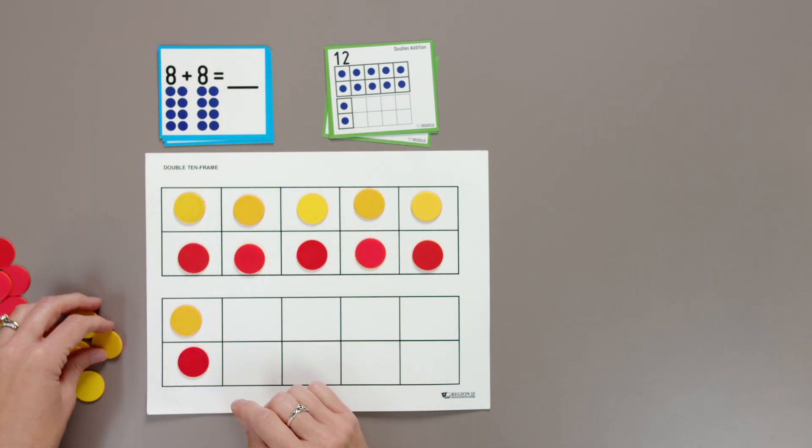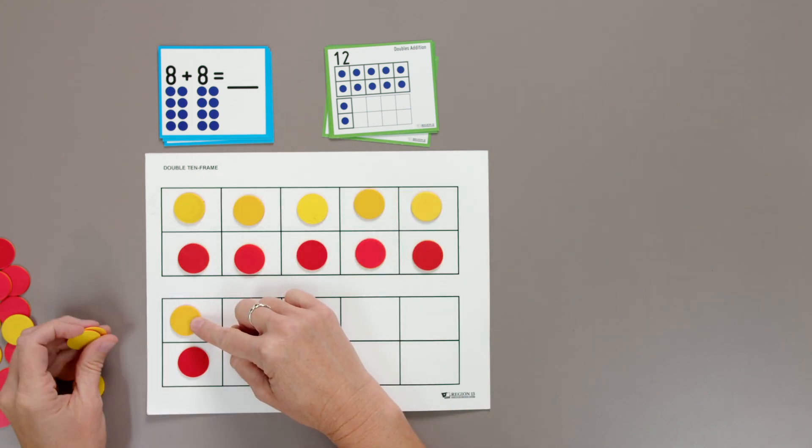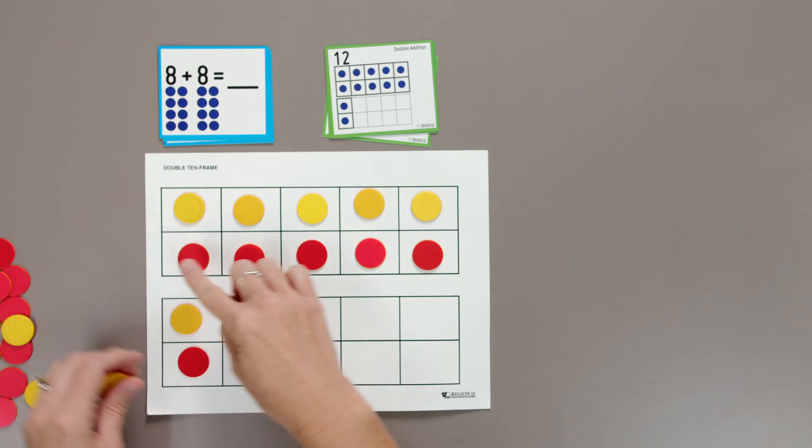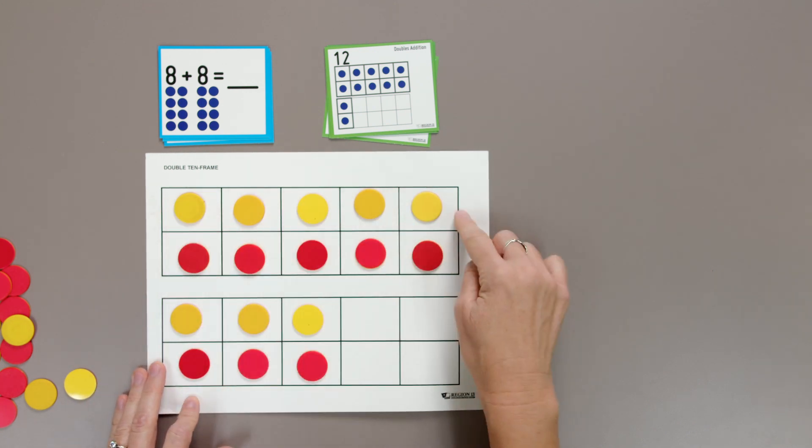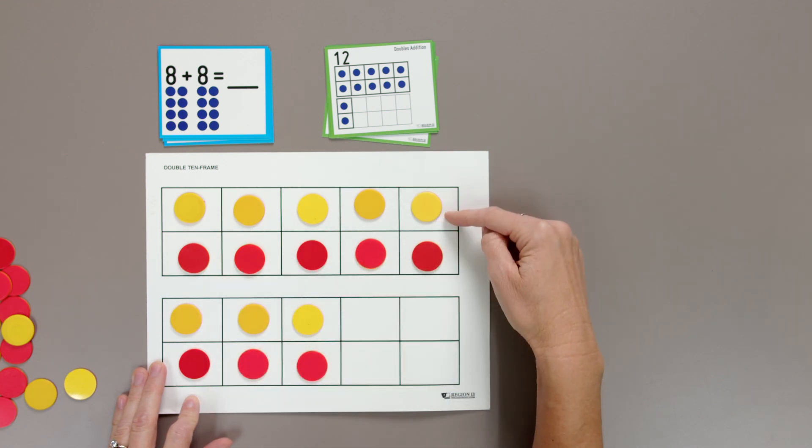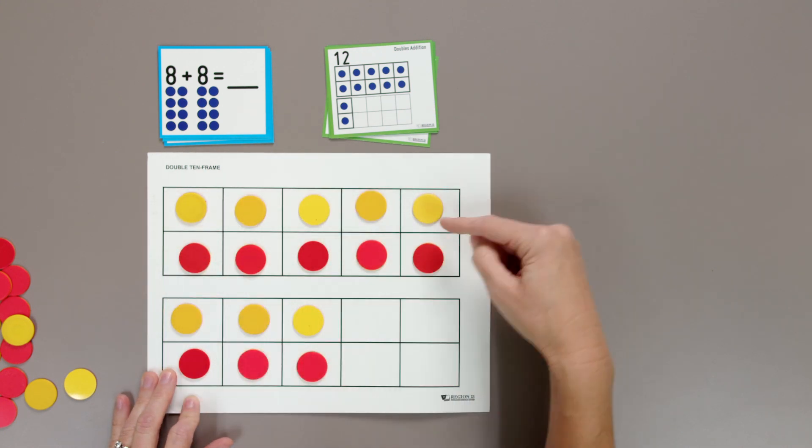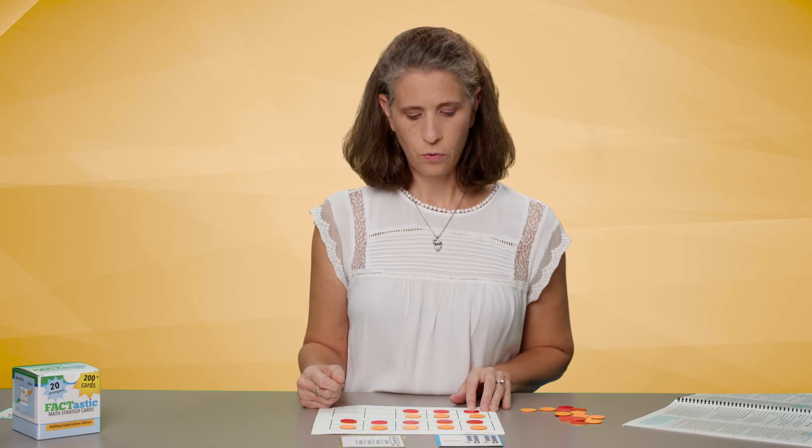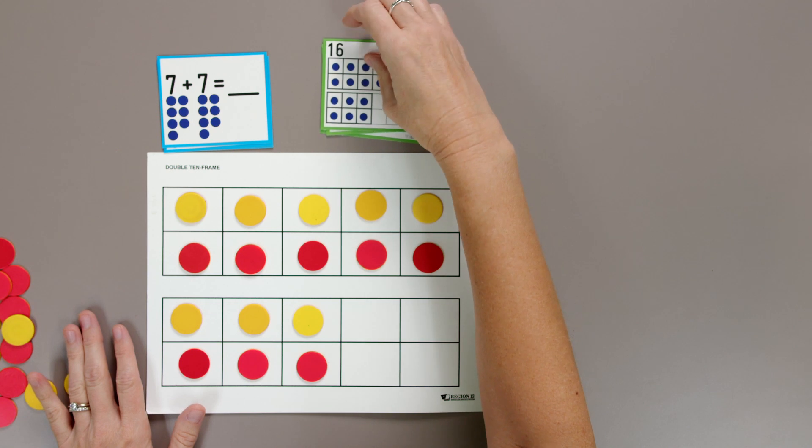Next problem is eight plus eight. Okay. Well, I have six yellow already on my 10 frame. So seven yellow, eight yellow. And I have six red. I'll add seven, eight. Now I have eight yellow, eight red. Eight plus eight. Filled up one 10 frame. Move to the next one. 10 and six, 16 all together. Let's take a mental picture of this one. Good job. Eight plus eight is 16.